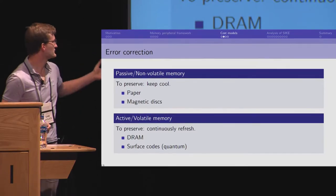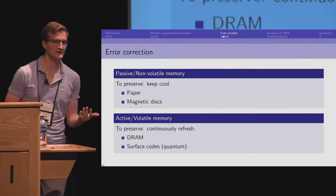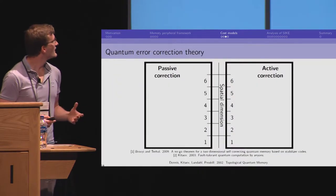On this slide, there's no examples of a passively corrected quantum memory. And this is not an accident.